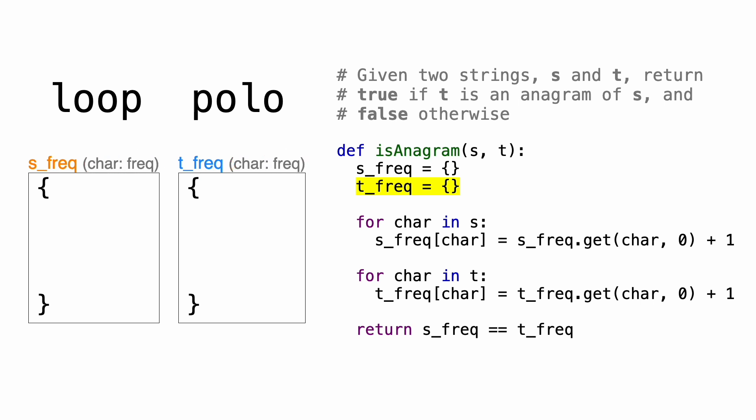So we're going to be using a variable called char to loop over s. Now let's break down this line. First, we're going to be using the built-in get method of dictionaries to get the value that corresponds to the key of char. So in this case, the key is l. Now the nice thing about using the get method is that it allows a second argument, which is what will be returned if the specified key doesn't exist in a dictionary.